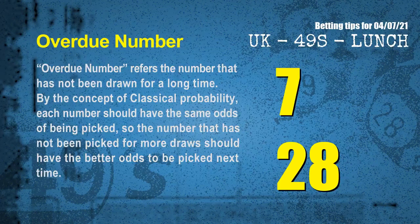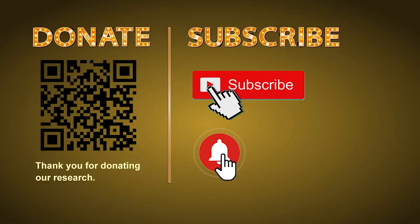The final information is overdue numbers — numbers that have not been drawn for a long time. By classical probability, a number not picked for more draws should have better odds to be picked next time. After counting thousands of results, the most overdue two numbers are 07 and 28. Thank you for watching. Please share your numbers and hitting performance in the comments below, and like, share, and subscribe to our channel. Thank you, bye bye.